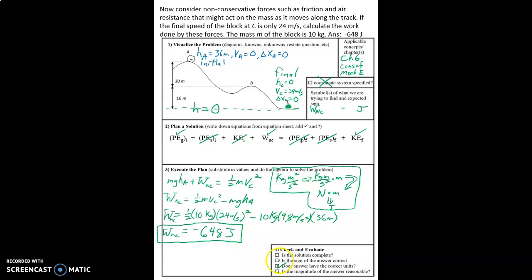Alright, so the units are correct. Sign of the answer. We expect it to come out negative and it did because friction and air resistance are removing energy from the system. Is the solution complete?